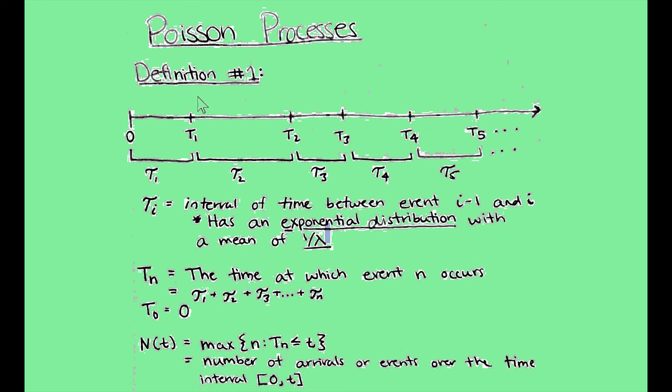And if we count 1, 2, 3, 4, 5, we've had 5 events up to that point. So we can label N(t) means it's measuring the number of arrivals or events that occur over that time interval from 0 to that t that you provided.